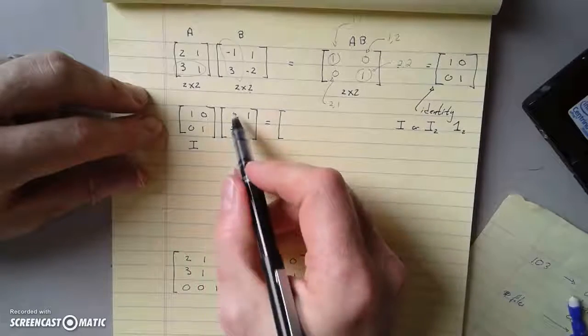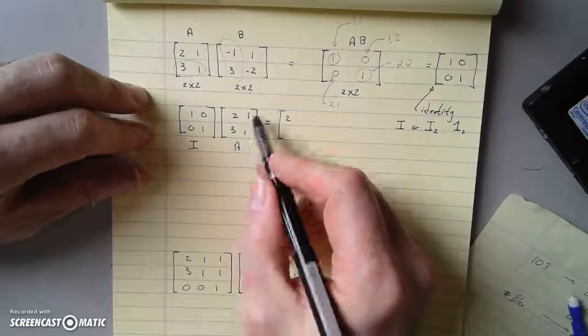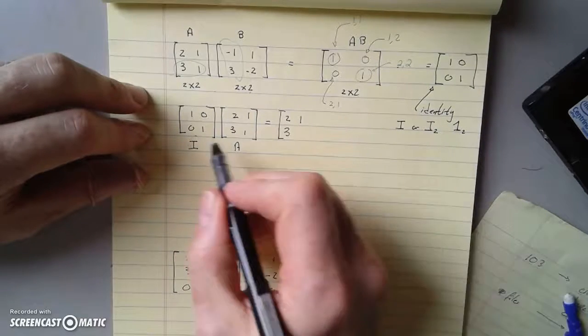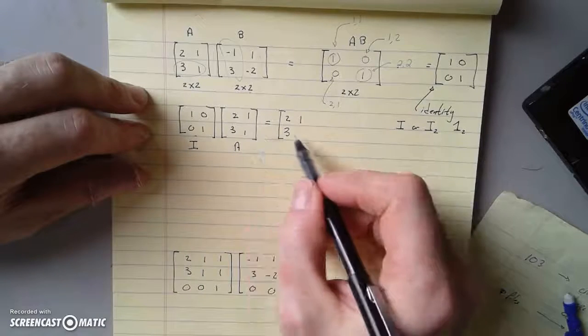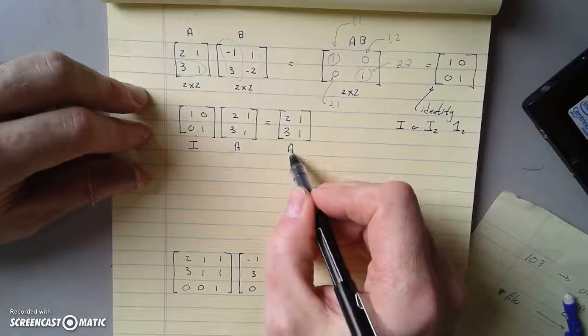Well, first row, first column, I get 2. First row, second column, I get 1. Second row, first column, I get 3. Second row, second column, I get 1. What's that? Well, that's A again.